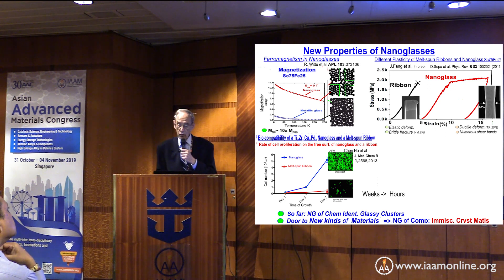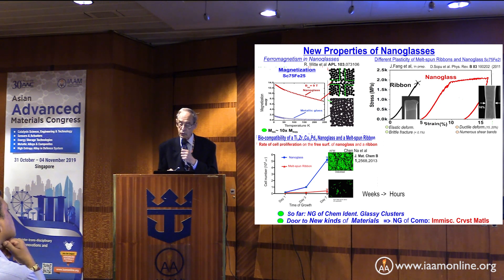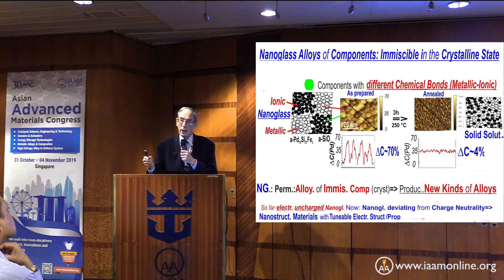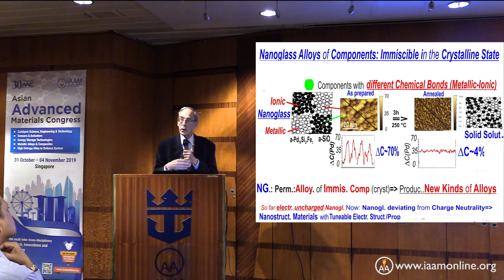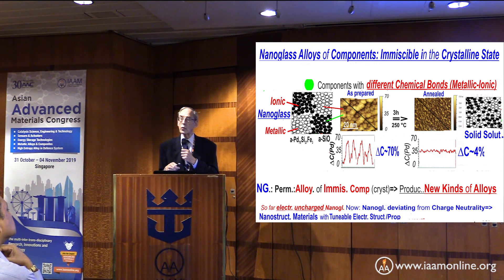What I discussed so far were nanoglasses made up of glassy clusters with identical chemistry — but that's not necessary. We can also take clusters with different chemistry and mix them together. This is something you could never do with a melt-spun glass. And that opens up a whole new door as far as structure goes.